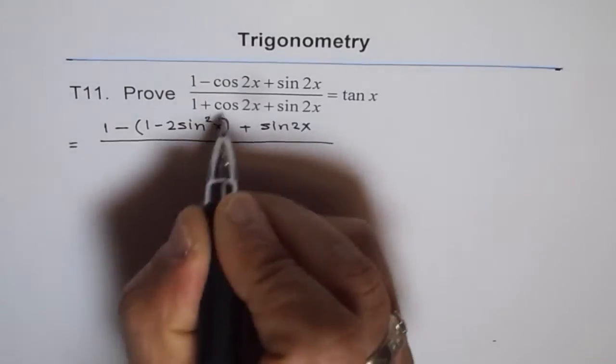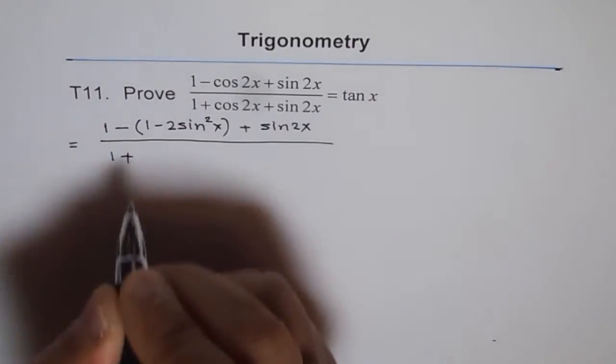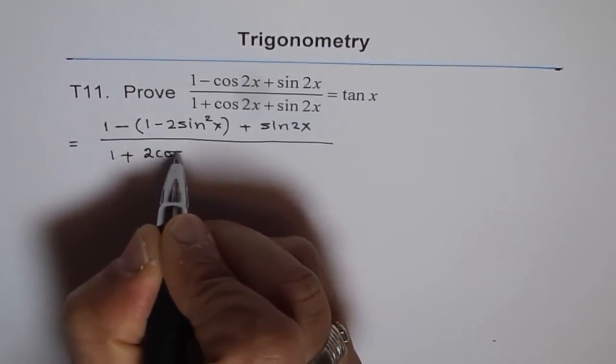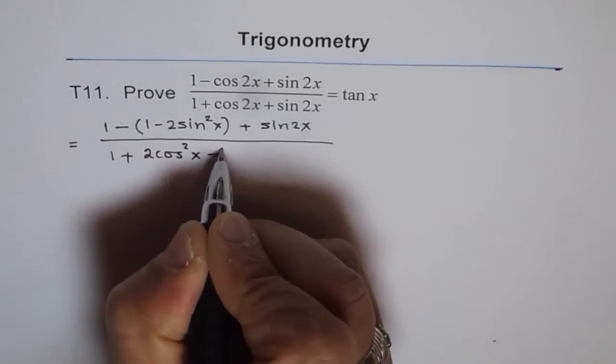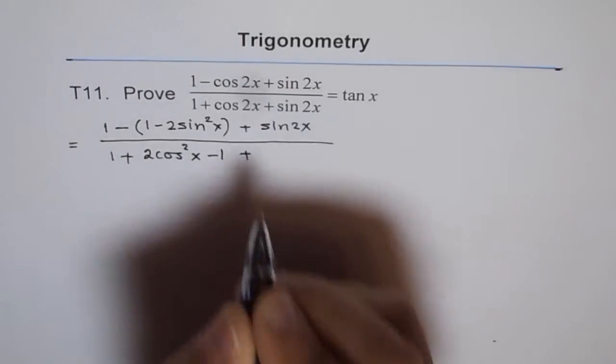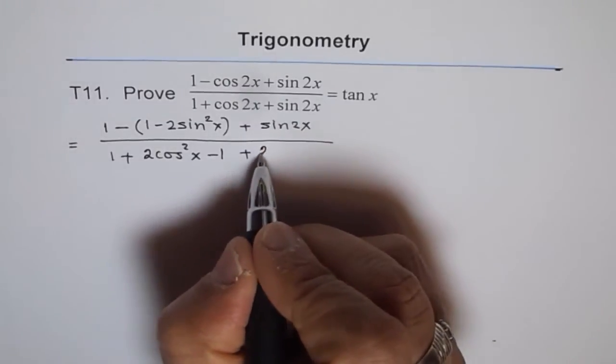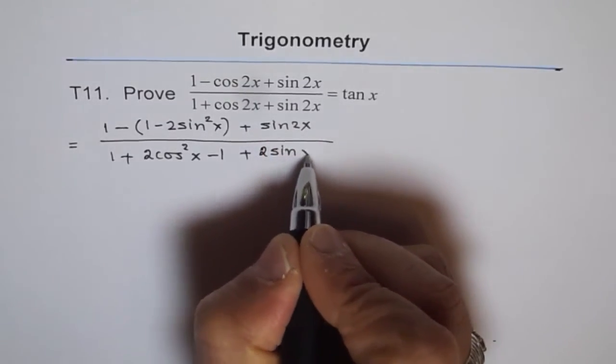And in the denominator, I will write cos 2x as 2 cos square x minus 1. Plus, well I should have written sin 2x straight as 2 sin x cos x. Let me write it here at least.